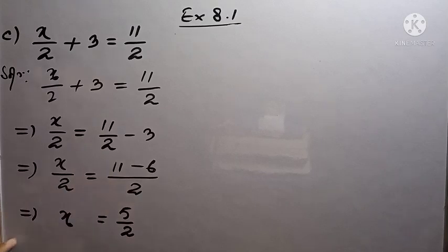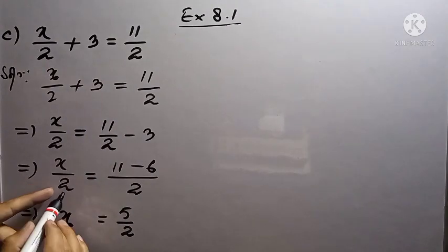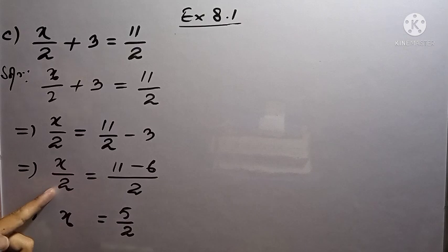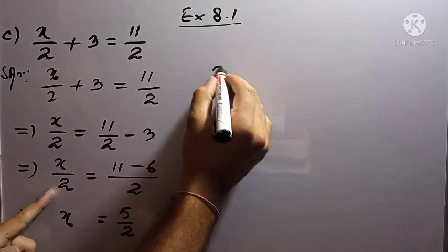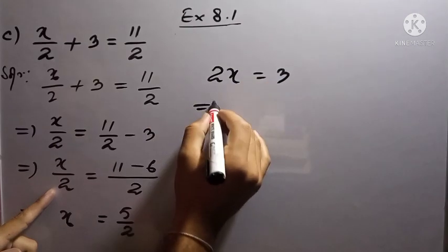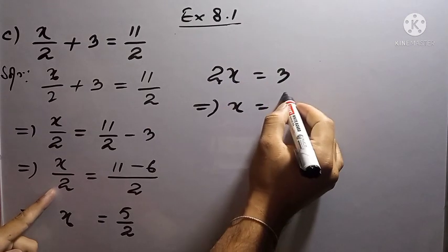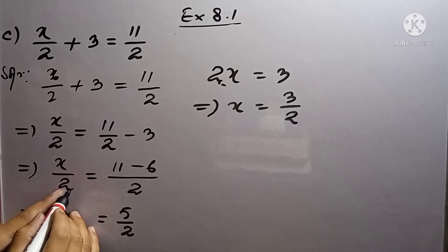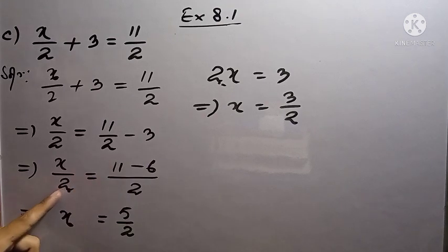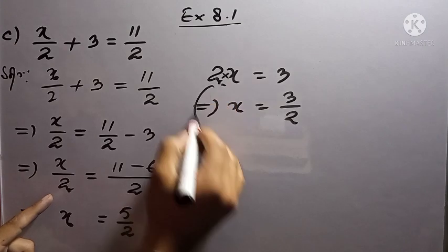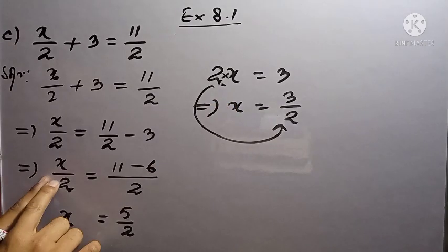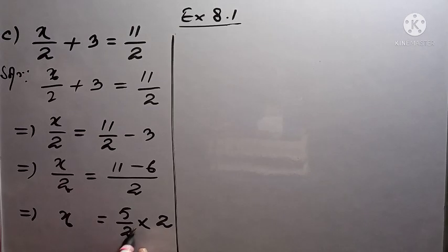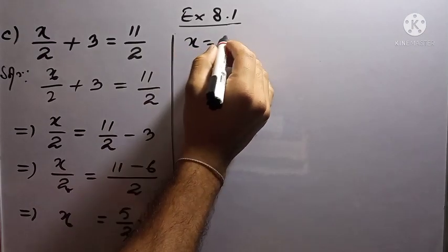So we have x by 2 equal to 5 by 2. Now 2 is dividing x, so when 2 goes to the other side it has to multiply. For example, if 2x equals 3, then x equals 3 by 2 — the 2 comes down. Here since 2 is in the denominator, when it goes to the other side it goes to the numerator. So we multiply both sides by 2, the 2's cancel, and we get x equals 5.